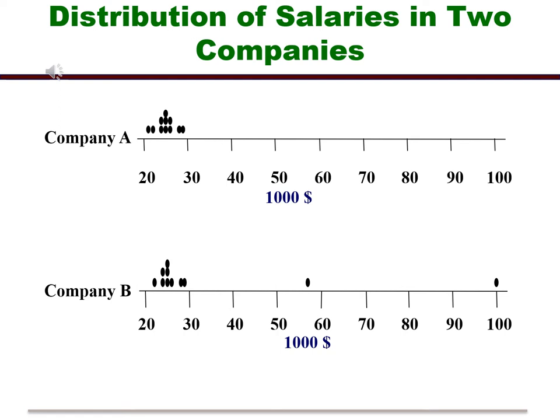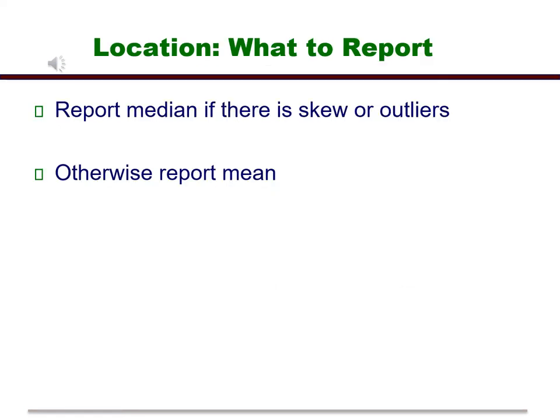So the question now becomes what measure of location is best to use? For measures of location, we will report the median if there is skew in the data or potential outliers. Otherwise, we will report the mean.